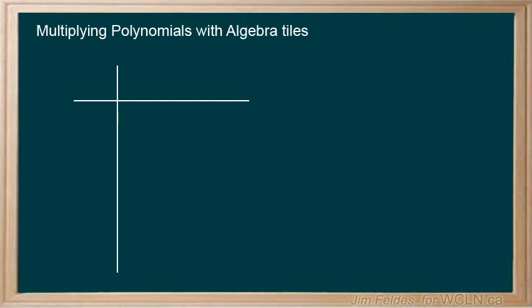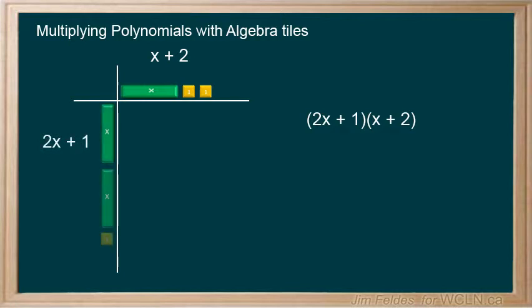Here are two simple binomials being multiplied together. We'll put the x plus 2 across the top and the 2x plus 1 on the vertical axis. We can use some grid lines to guide us as to what terms end up in the solution.